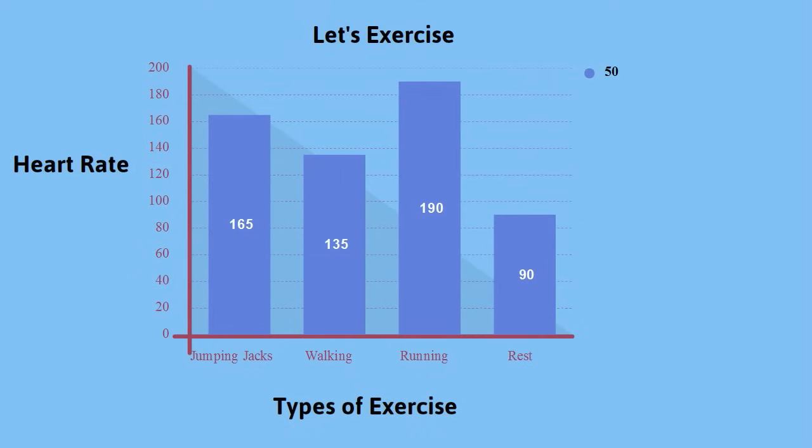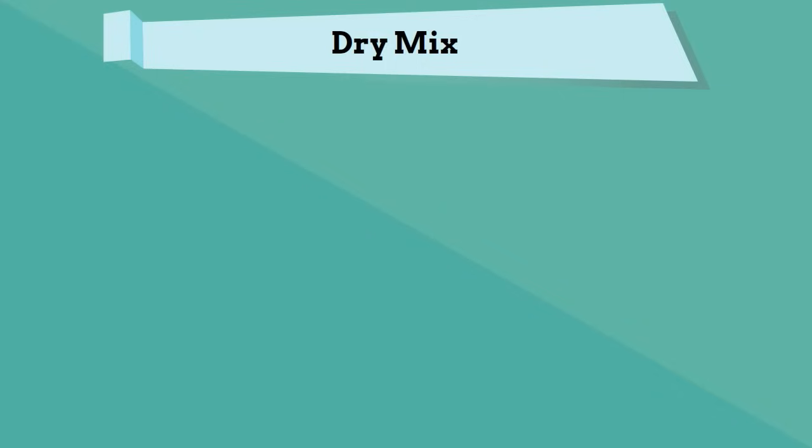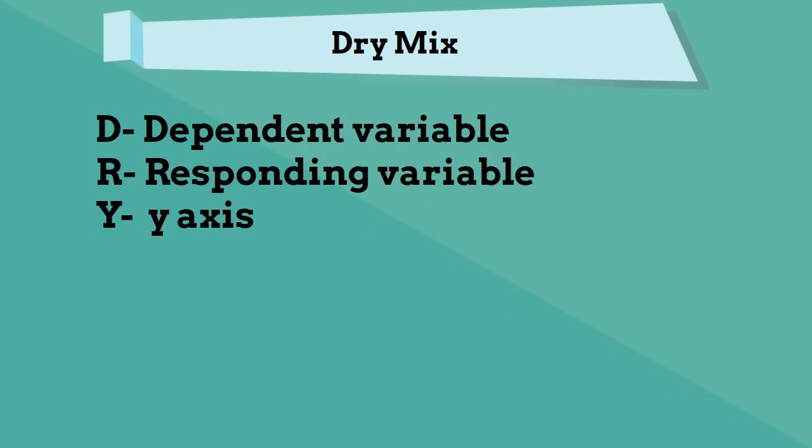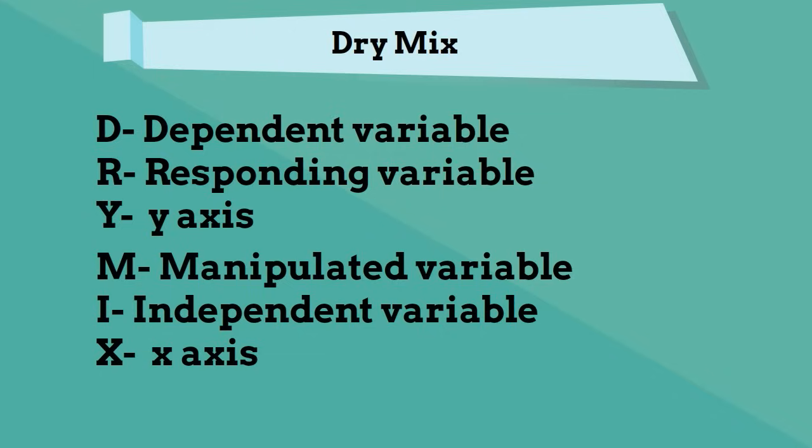So I placed the dependent variable heart rate on the y axis and the independent variable which is the type of exercise on the x axis. If you need to review independent and dependent variables I've created a video and I'll put a link in the show notes. You can use the saying DRY MIX to help you remember which axis the dependent and independent variable goes on. The DRY stands for dependent responding are on the y axis and the MIX stands for the manipulative independent variable is on the x axis.